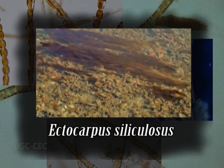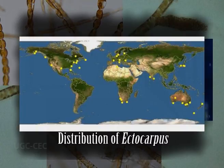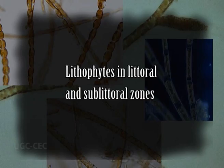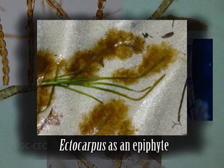Let us analyze its distribution. Ectocarpus is a marine alga of worldwide distribution with many species. A few of them, at least 6, have also been reported to occur in fresh waters. The marine species are cosmopolitan in distribution but are more abundant in colder seas of temperate and polar regions. The genus is common along the Atlantic coast but scarce along the Pacific coast. It mostly occurs as a lithophyte along coasts in littoral and sublittoral zones.